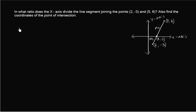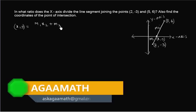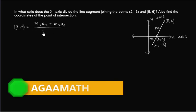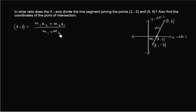In previous classes we have seen the section formula: x comma y is equal to m1 x2 plus m2 x1 by m1 plus m2, comma m1 y2 plus m2 y1 by m1 plus m2.